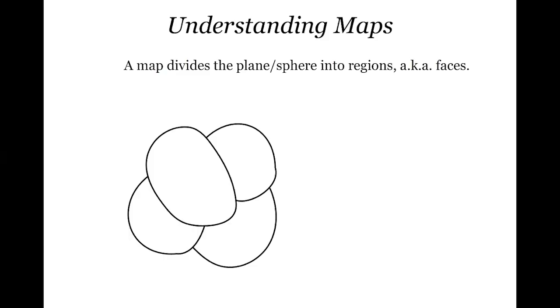When counting the different faces, we want to count the outside of whatever our cluster of countries is — that lines up with the fact that if you think of this as a map on a globe, there's no inside or outside. Here we've got five faces in this particular map. Those faces are divided by lines separating them, and we can think of these curves as forming a network of edges. I want to count as a single edge something that separates two and only two countries.